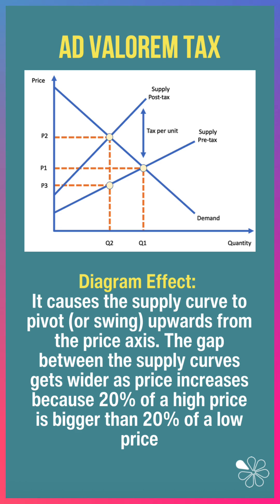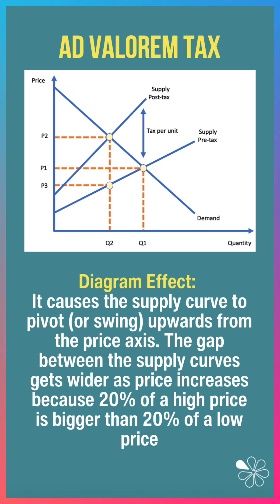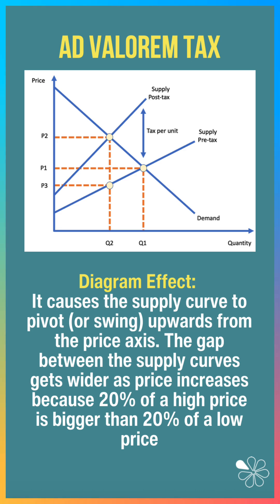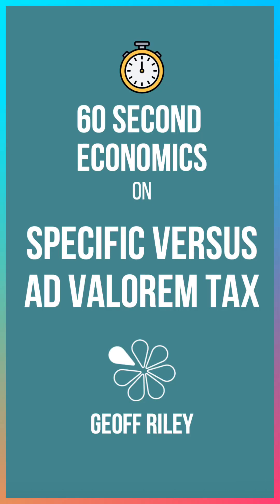On the diagram, an ad valorem tax causes the supply curve to pivot or swing upwards. The gap between the supply curves gets wider because as price goes up, 20% of a high price is bigger than 20% of a low price. You can see the effect here on the diagrams, and the shaded areas show, in this example, who pays the tax.